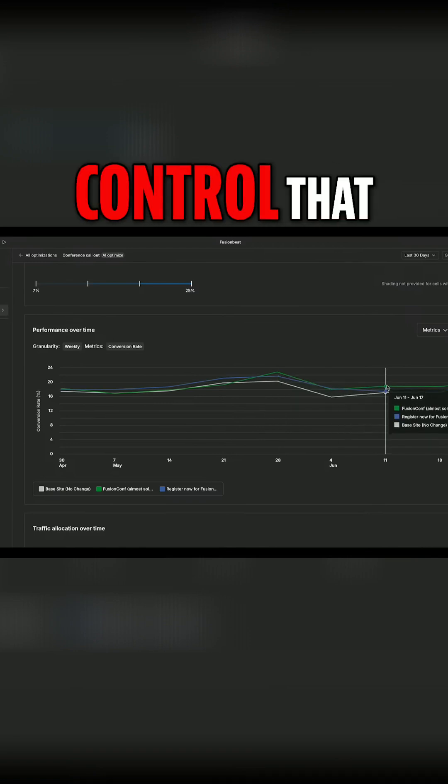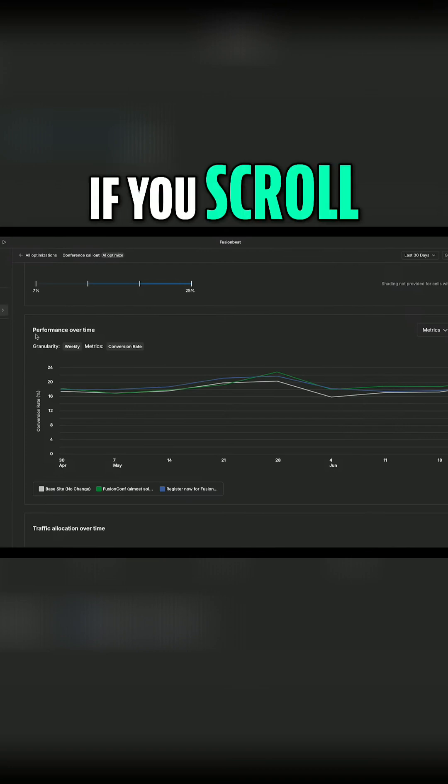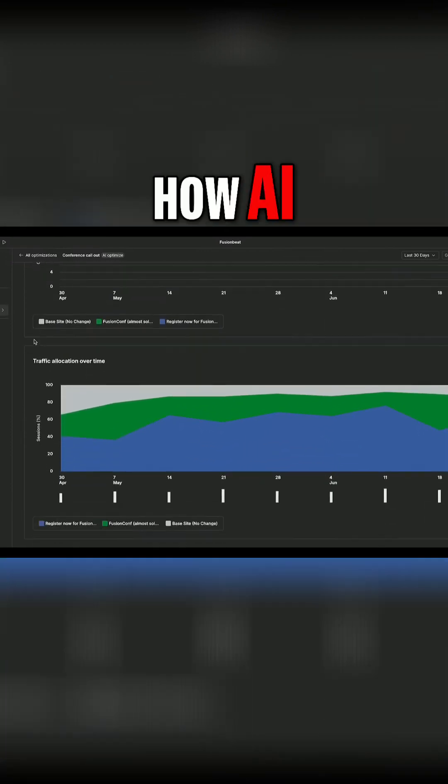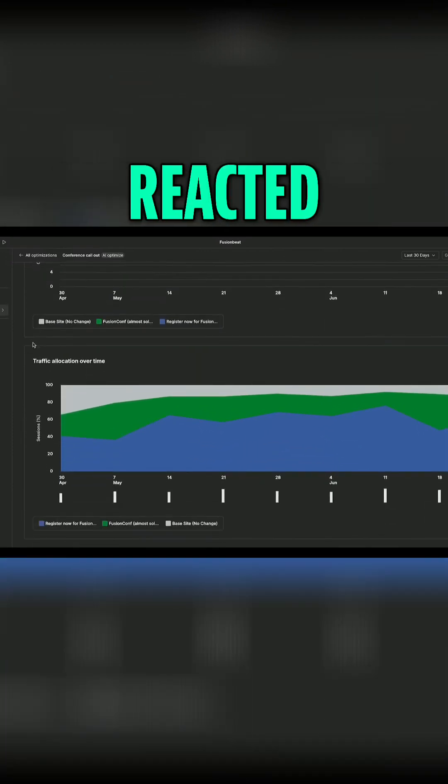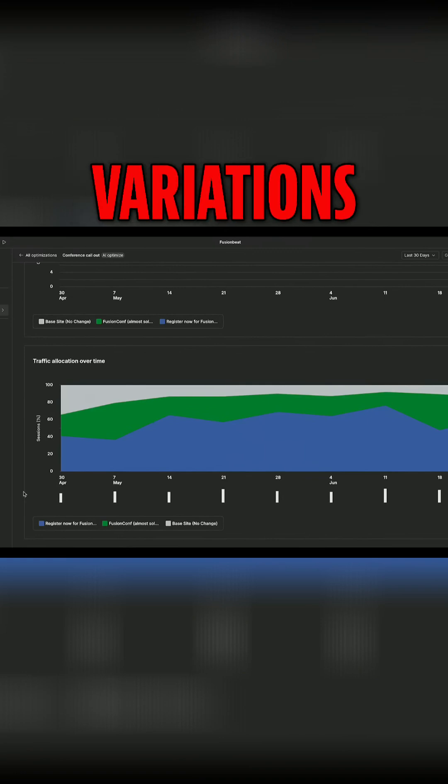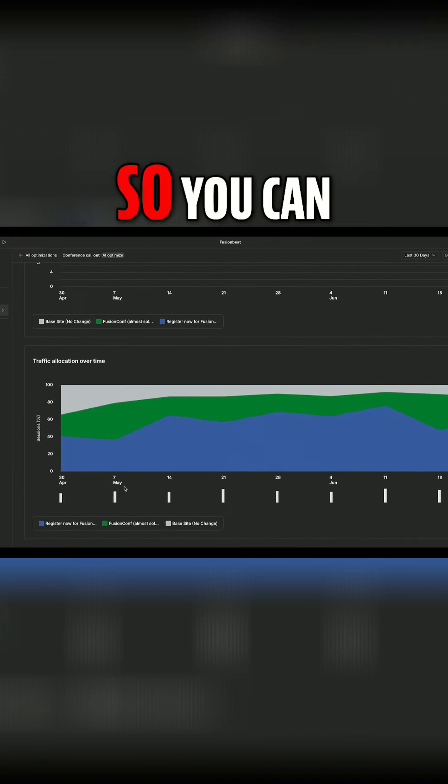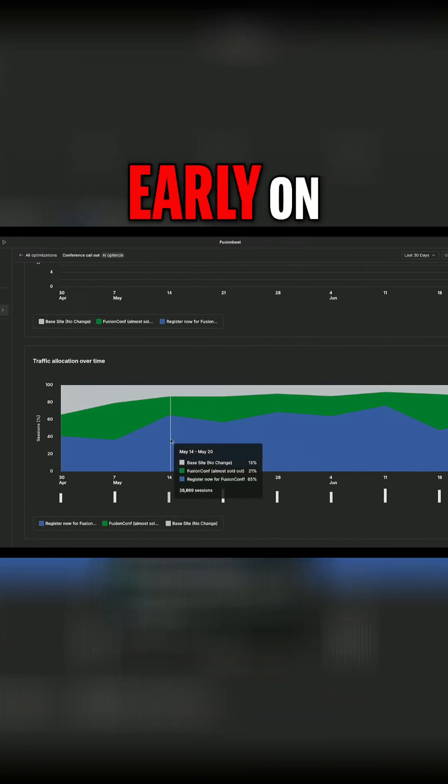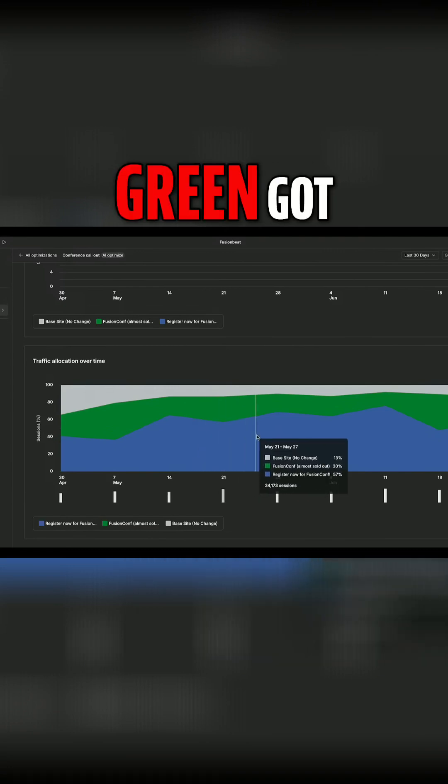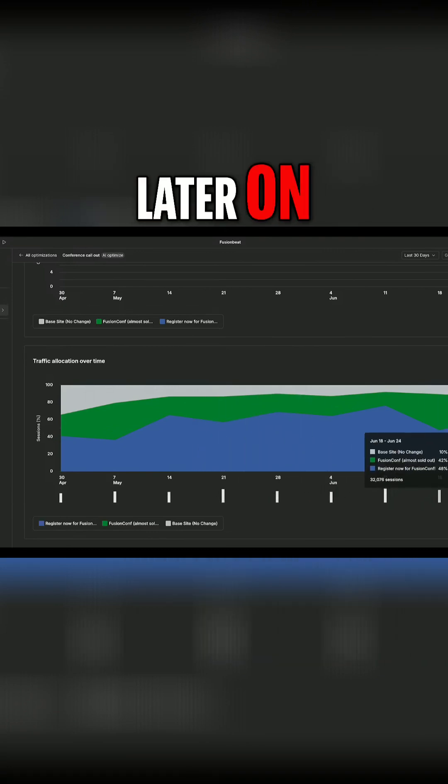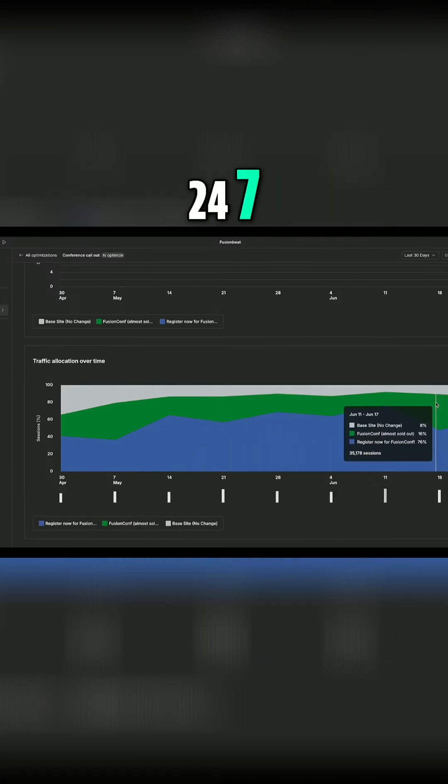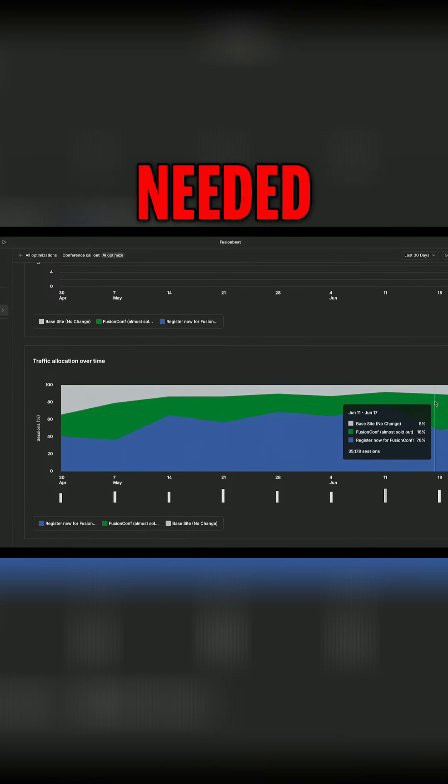Okay, audience behavior changes, we don't control that. But then if you scroll further down, you get to see how AI Optimize automatically reacted, showing the higher performing variations when they were doing better. So you can see blue got more traffic early on. Green got more traffic later on, automatically, 24-7, with no human intervention needed.